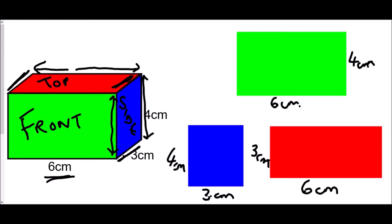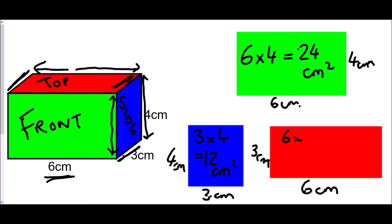The area of a rectangle is width times height. The green front face: 6 × 4 = 24 cm². The blue side face: 3 × 4 = 12 cm². The red top face: 6 × 3 = 18 cm².